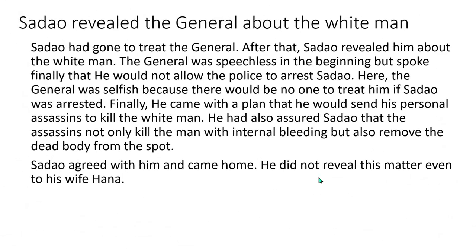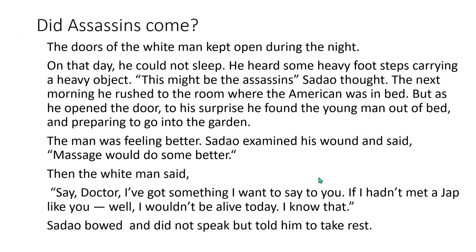Sadao revealed the matter about the white man to the general. The general was speechless at first, but finally spoke. He said he would not allow the police to arrest Sadao — being selfish, as there would be no one to treat him if Sadao were arrested. The general came up with a plan: he would send his personal assassins — trained murderers — to kill the white man. He also assured Sadao that the assassins would not only kill the man cleanly but also remove the dead body. Sadao agreed but did not reveal this matter even to Hana.